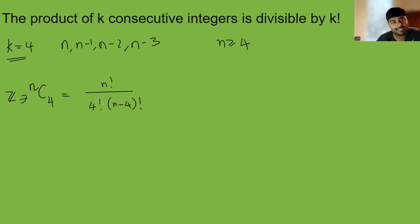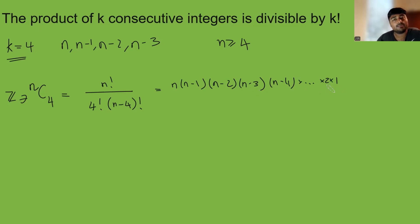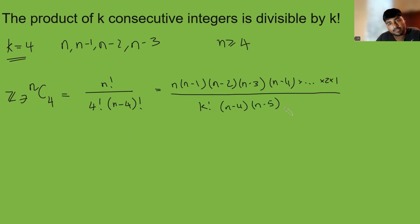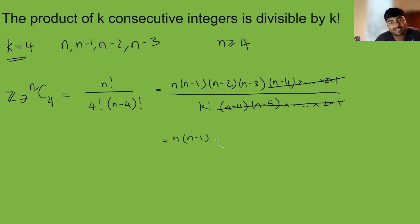Maybe you can see where this is going. Let's write n factorial as n times n minus 1 times n minus 2 times n minus 3 times n minus 4, and so on, all the way down to 3 times 2 times 1. That's all divided by 4 factorial times n minus 4 factorial, which is n minus 4 times n minus 5 and so on times 3 times 2 times 1. You can see that n minus 4 factorial cancels very nicely, and we're just left with n times n minus 1 times n minus 2 times n minus 3, all divided by 4 factorial.